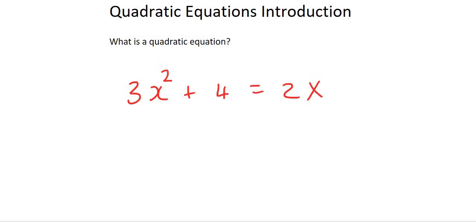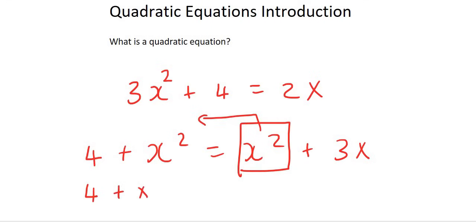But be careful, sometimes it looks like a quadratic equation, but it actually is not. Let me show you an example. What would happen here if we had to take, for example, this x squared over to the left-hand side, is that you would end up with something like 4 plus x squared minus x squared equals to 3x, and these x squares would cancel out. So what looked like a quadratic equation in the beginning actually turned out to be a normal equation. So we will only say that it is a quadratic equation if there is an x squared that does not cancel out with another x squared.